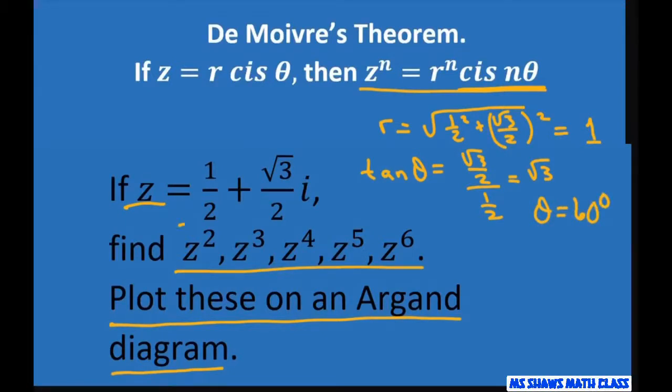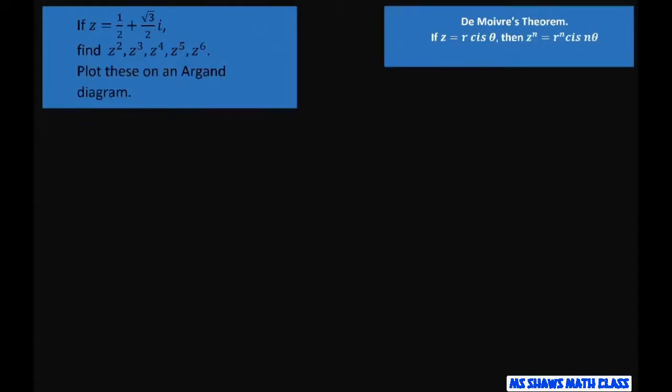We can rewrite this in polar form as 1 cis 60°. There's your 1 and there's your 60 degrees. Let's use our theorem now and find the rest.